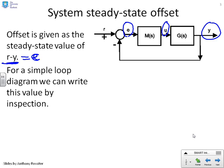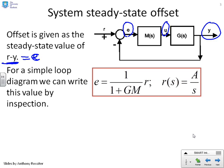Now for a simple loop diagram like this, we can write the transfer function for E by inspection. There it is. E equals 1 over 1 plus GM times R. And here we're assuming R of S is A over S. We've said that before.